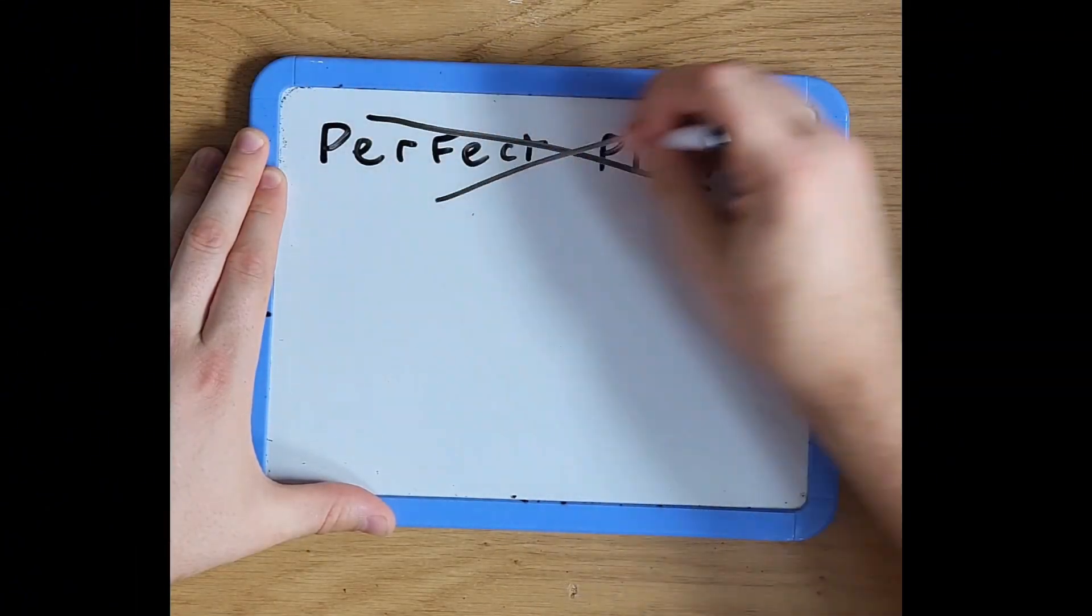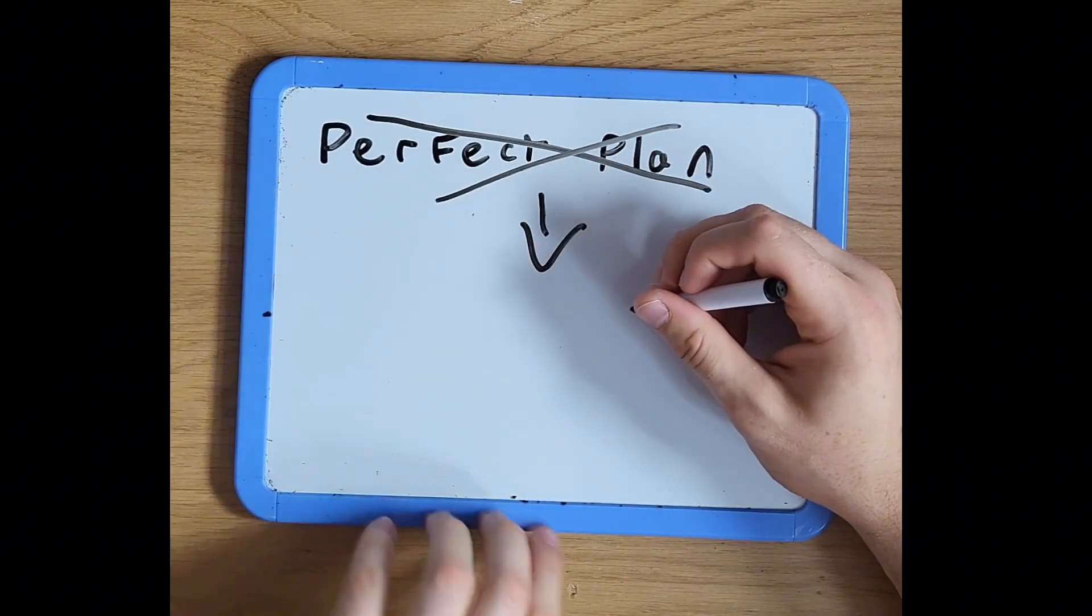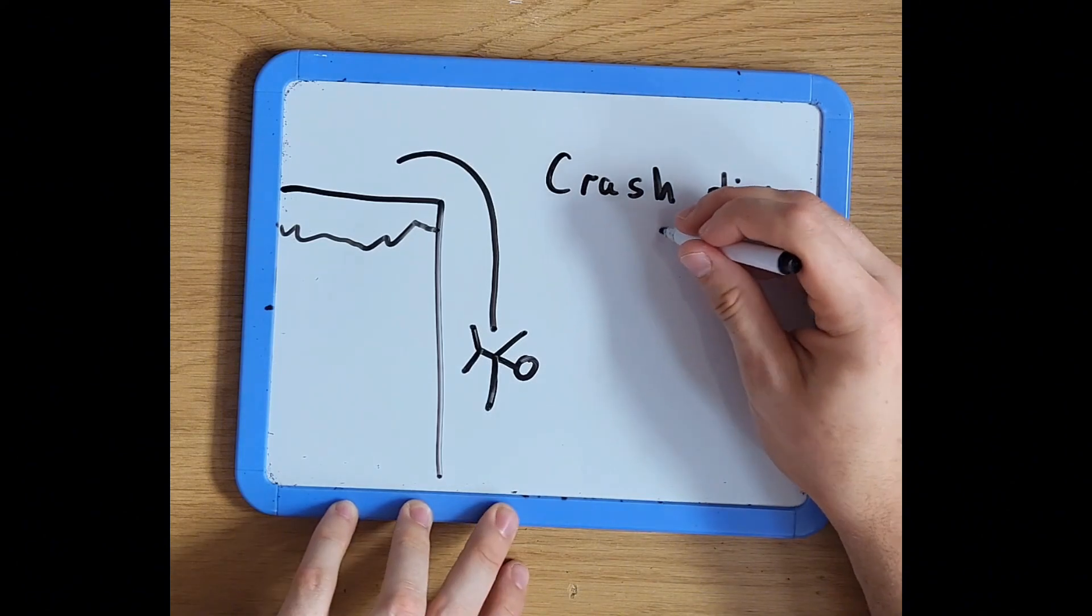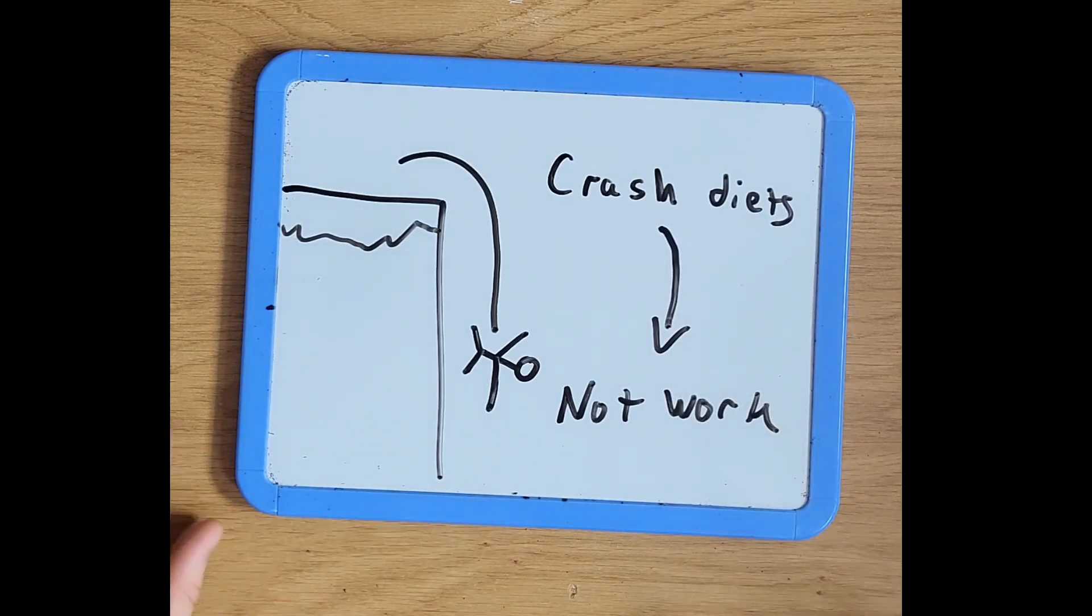Step two. Make a plan you can actually stick to. You don't need a perfect plan. You need a repeatable one. 1,200 calorie crash diets work. Until they don't. You'll burn out, binge, and blame yourself.